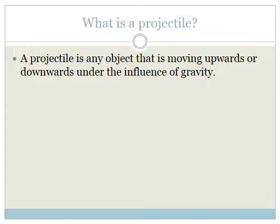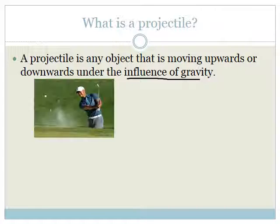What is a projectile? It's all very well talking about vertical projectile motion, but we need to know what a projectile is. A projectile is any object that is moving upwards or downwards under the influence of gravity. So it's any object — it could be a ball, a cricket ball, a rugby ball, a rocket, or a pen that you throw up and down. Anything moving upwards or downwards under the influence of gravity is considered to be a projectile.